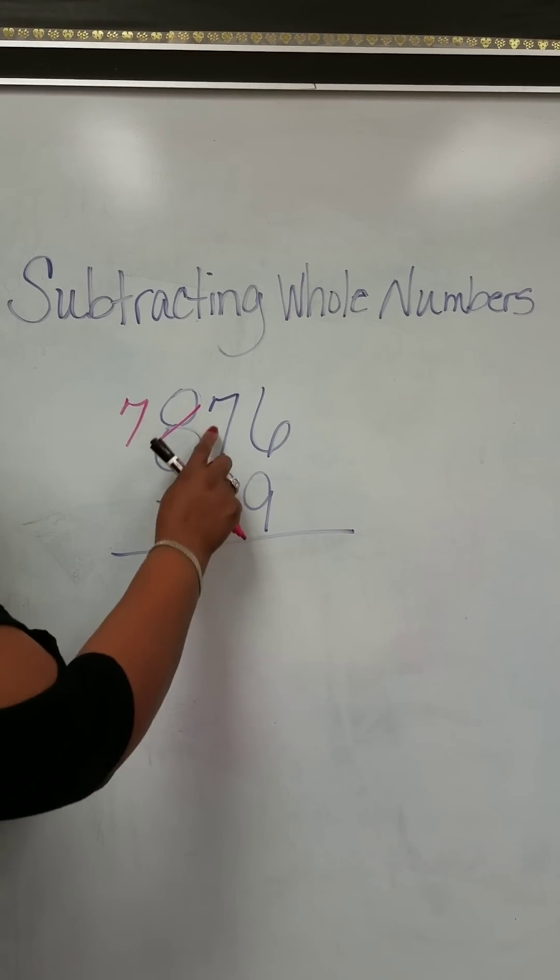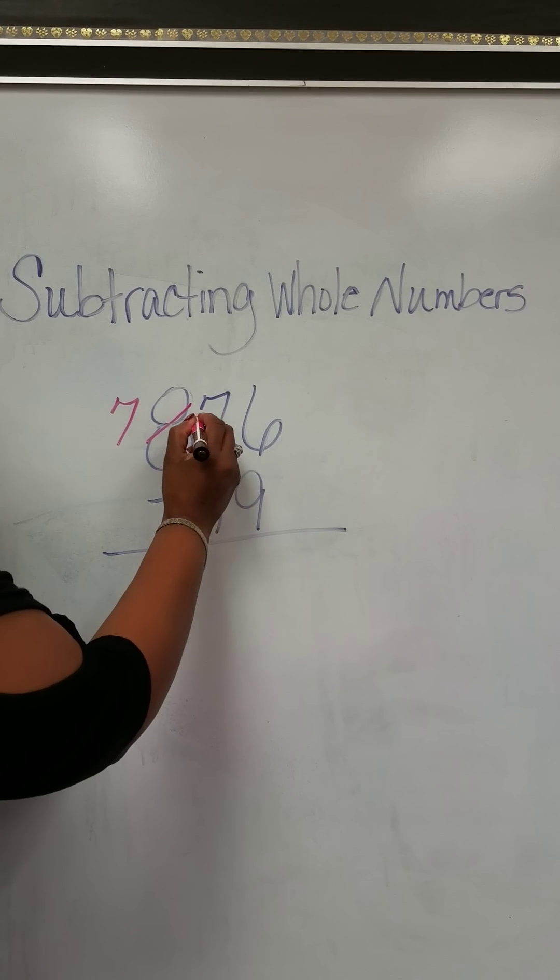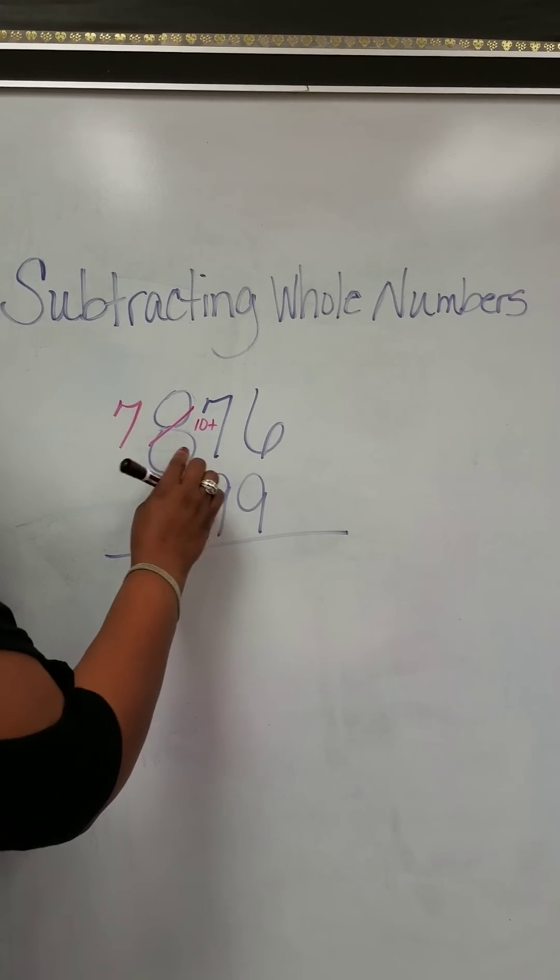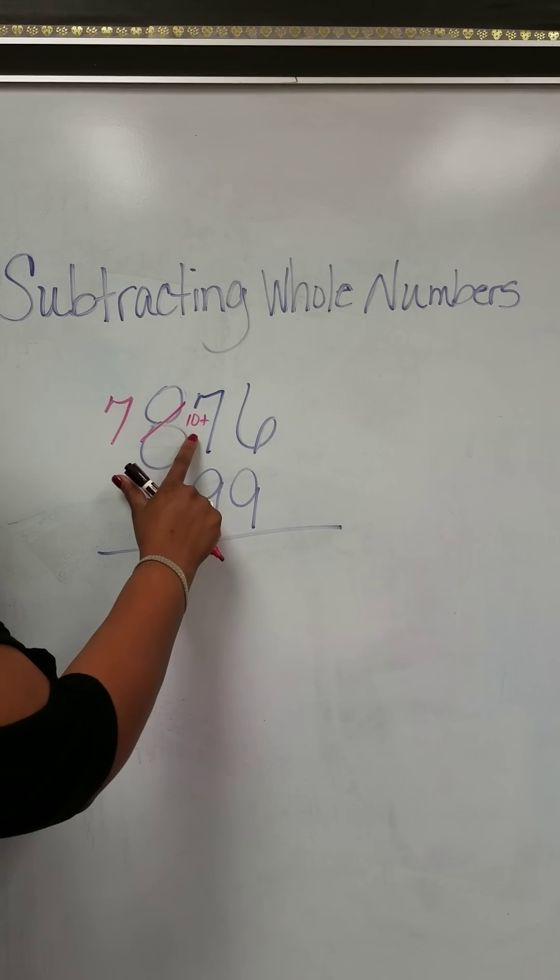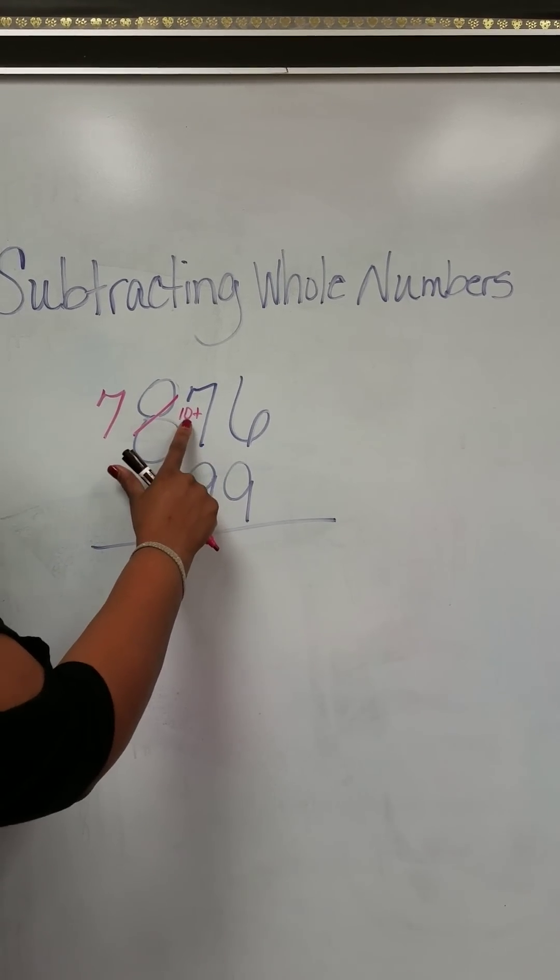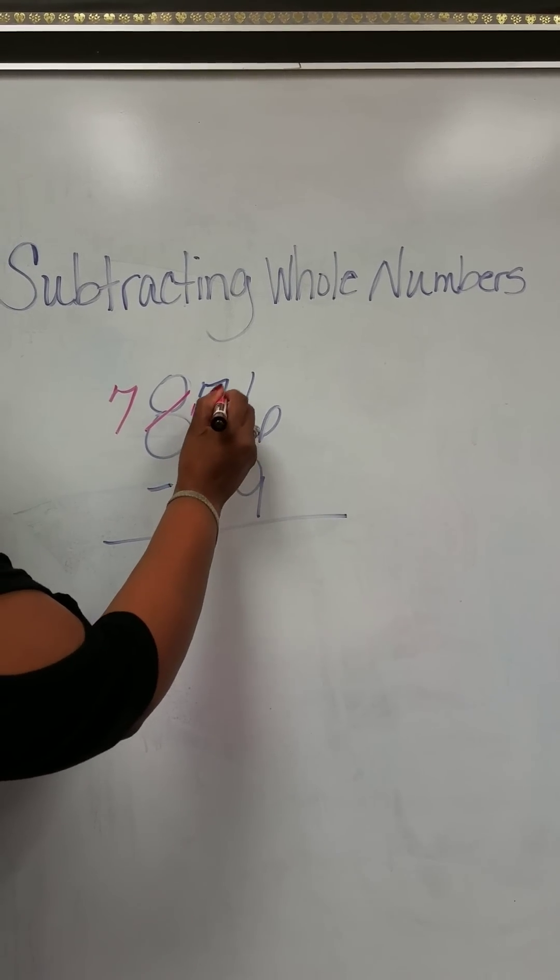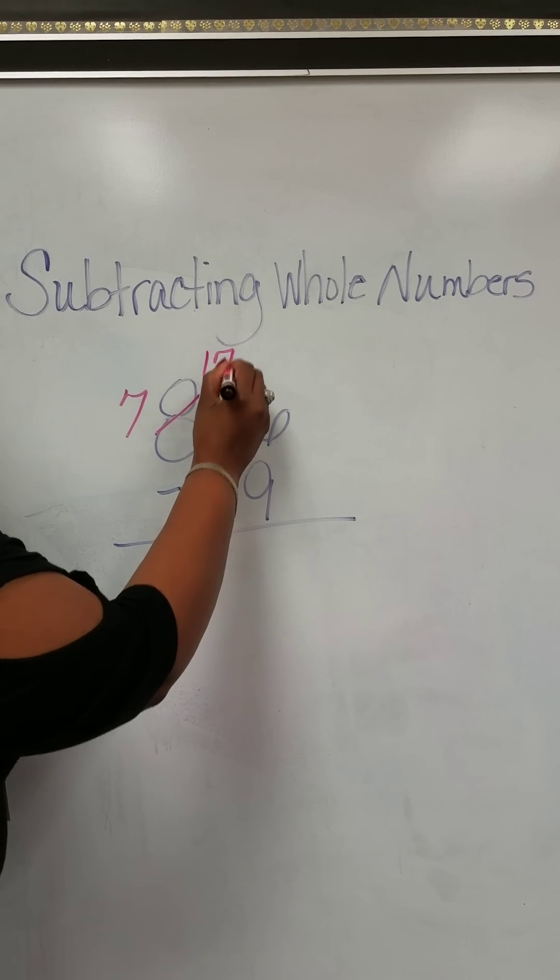The 10 more that we grabbed, we add to the 7. We put a little 10 there and a plus sign to show we're adding the 10 to the 7. So 10 plus 7 is 17. We're going to cross that out and we have a new number.